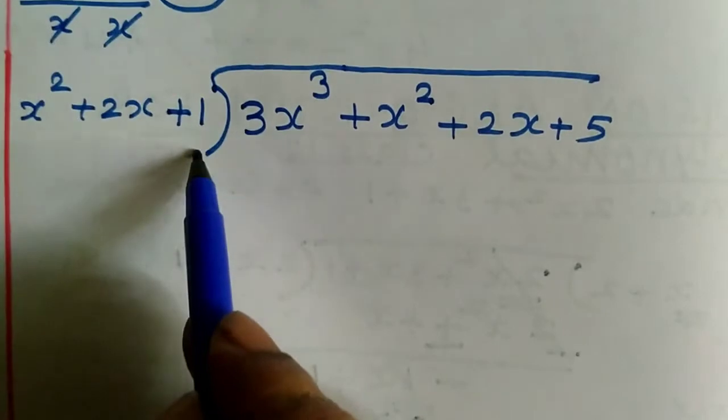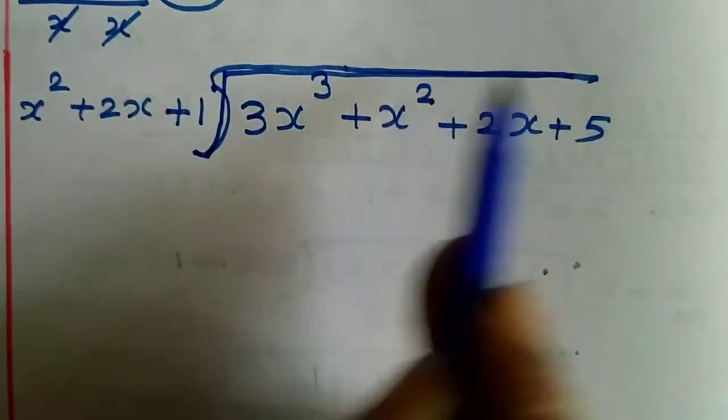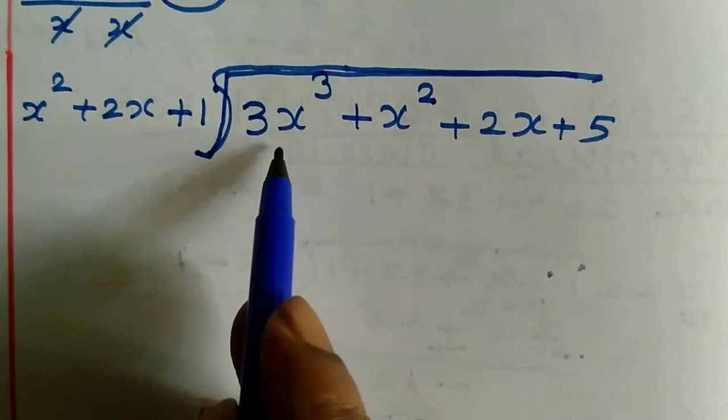We have 3x³ + x² + 2x + 5, which is p(x), and x² + 2x + 1, which is g(x).